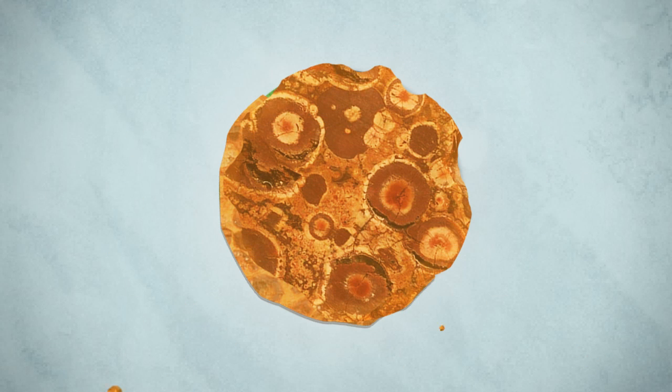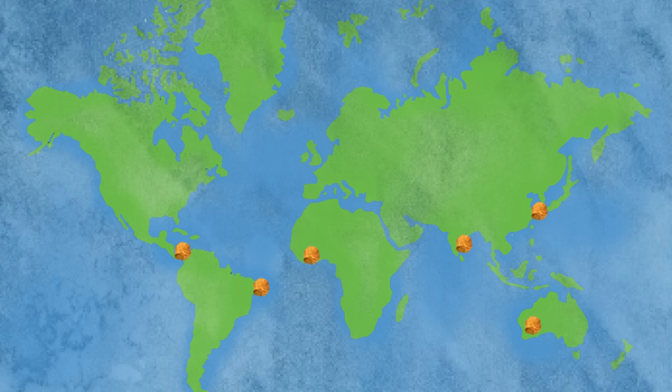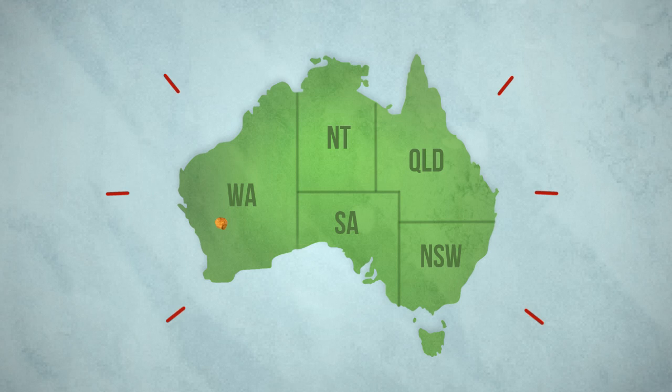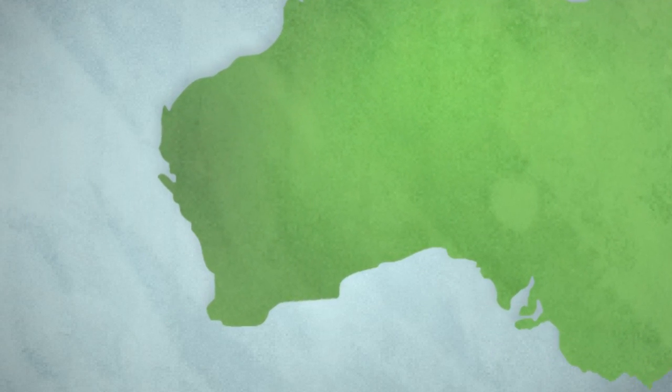And it all starts with a little rock called bauxite, which is found in nice warm climates like these. Plenty of bauxite is found here, where millions of tonnes is produced each year.